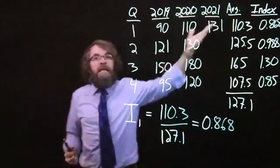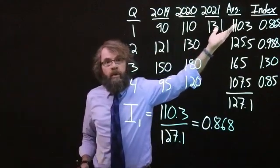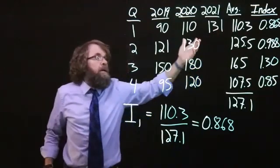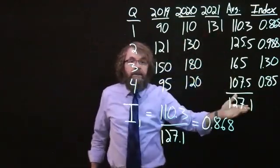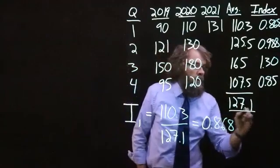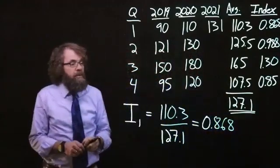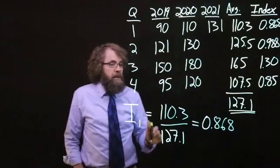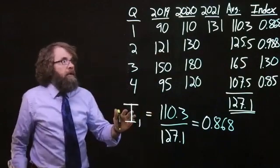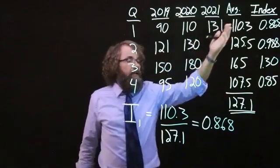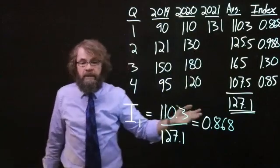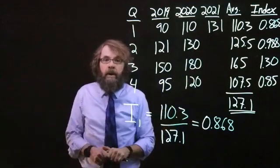Again, to recap, take the average for every, in our case, quarter. Then find the average of those averages, overall average, 127.1 in our case. And then for each period, divide the period average by the overall average to get the seasonal index for a particular period.